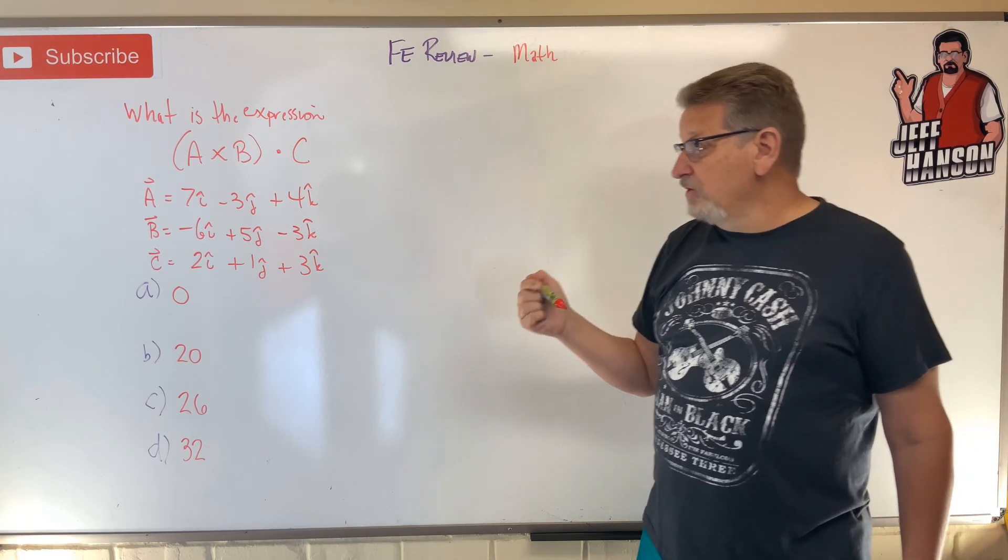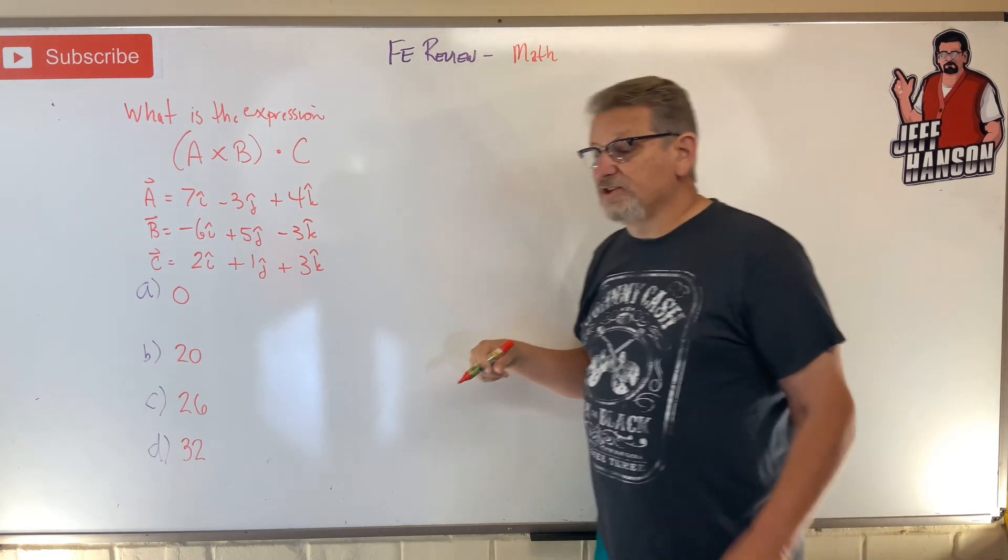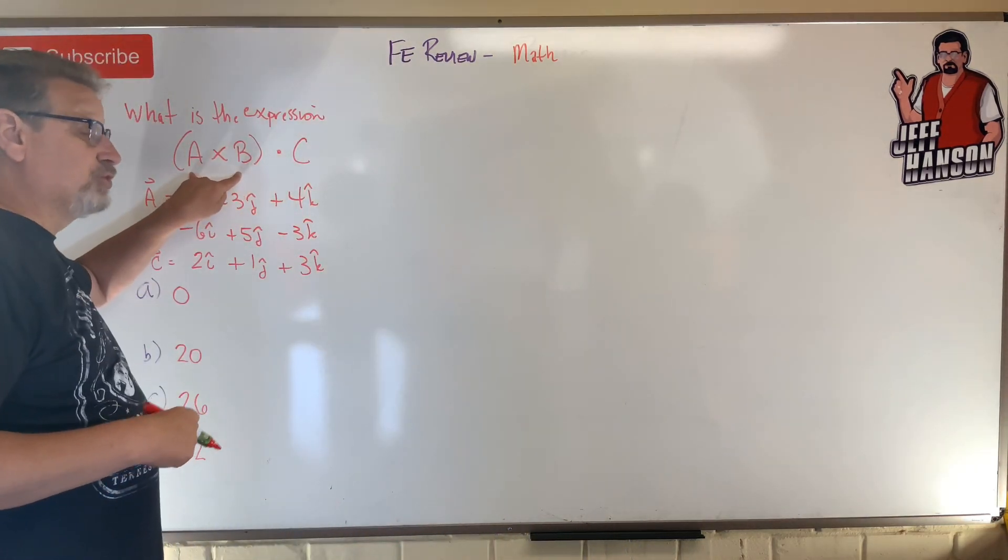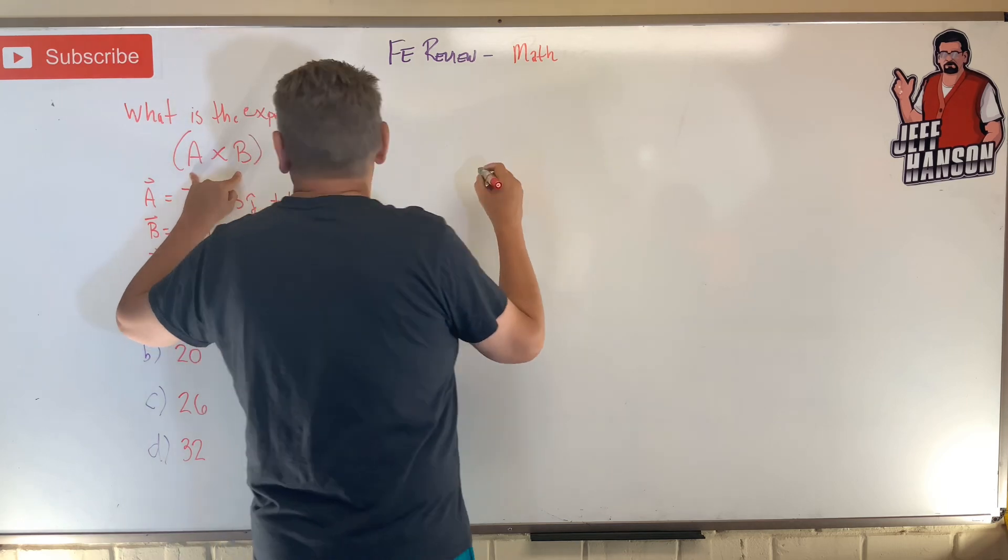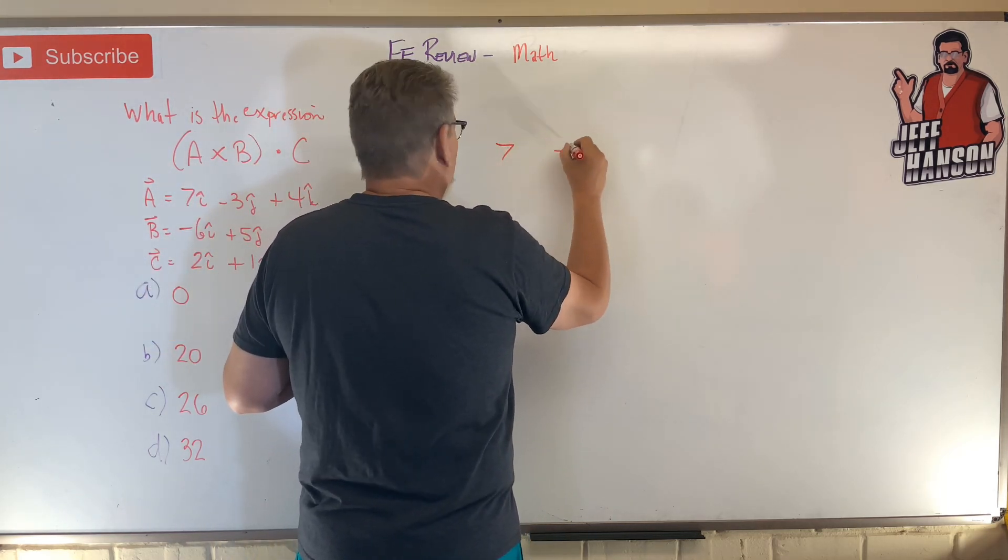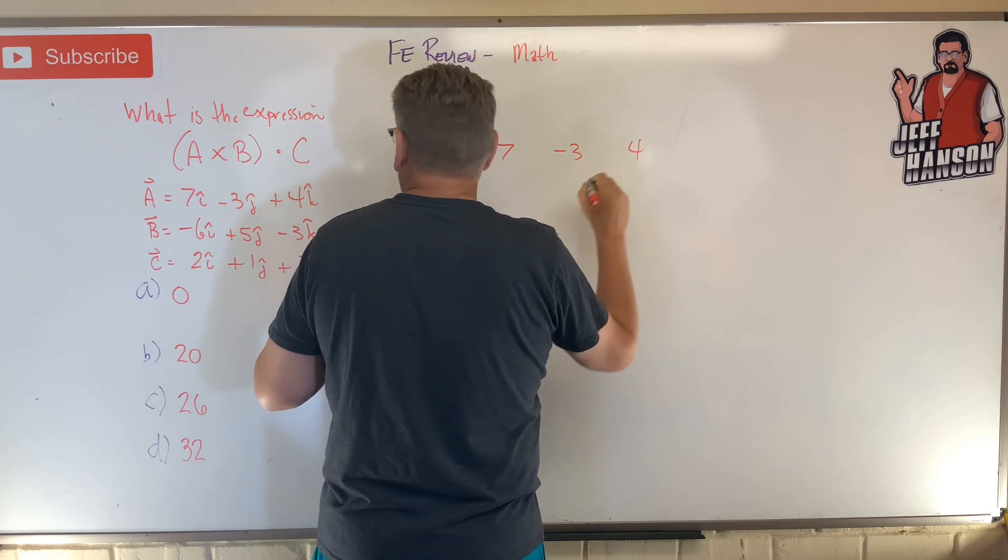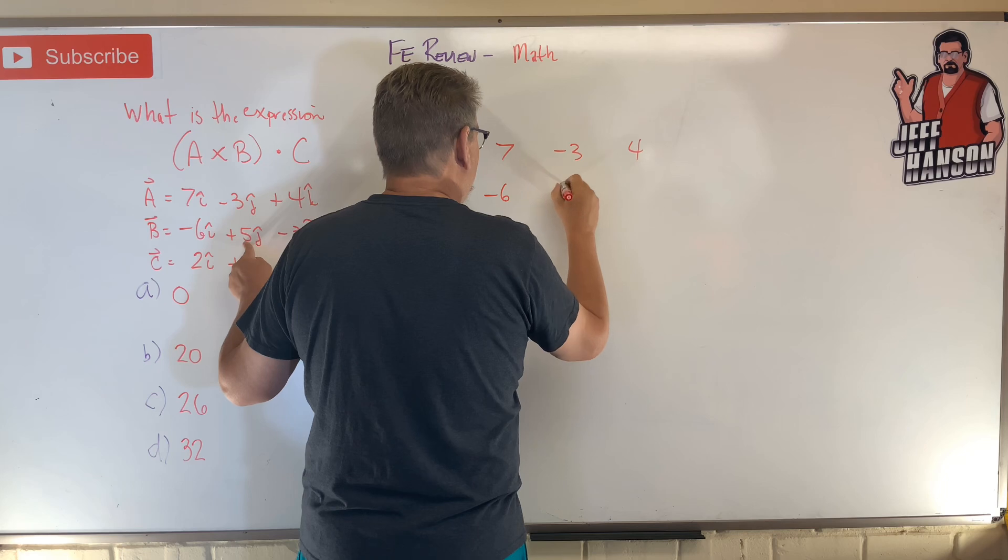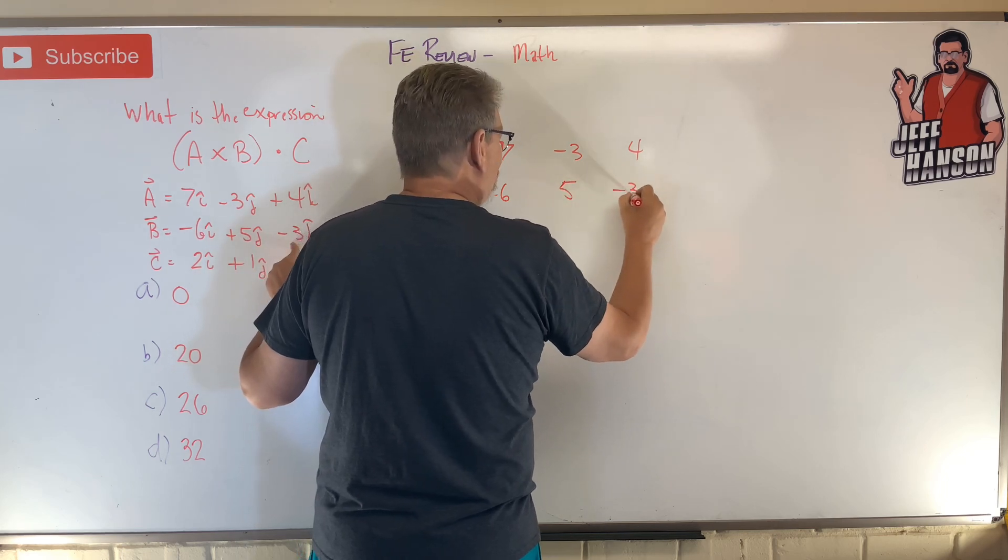Okay, did you get an answer? Let's see if we can do this. Let's start here. Order of operation says let's do the cross product first. So we're going to cross A and B. So we have seven, minus three, and four. And then B is minus six, five, and minus three.